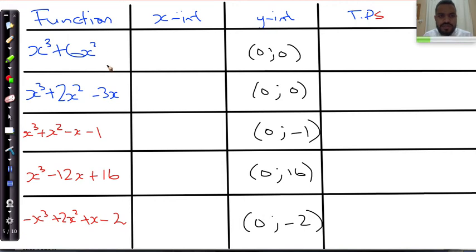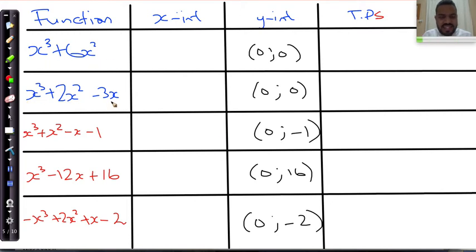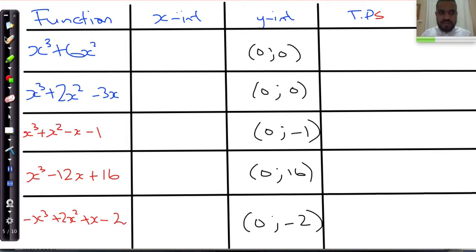The ones in blue are the very simple ones. Why are these easy? Notice the pattern — there's an x in every single term. And the moment you see that, it becomes very simple because x is a common factor.